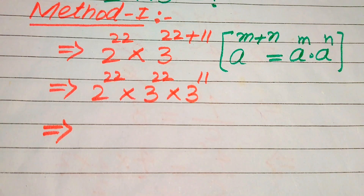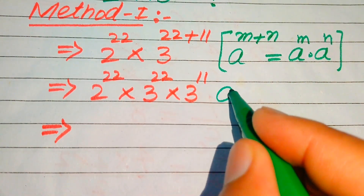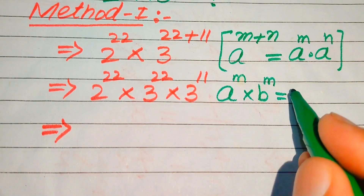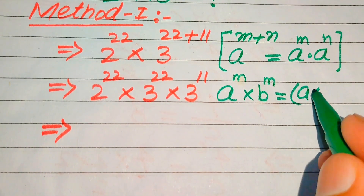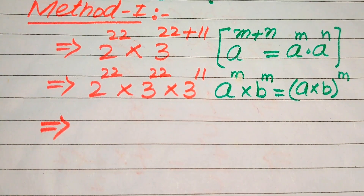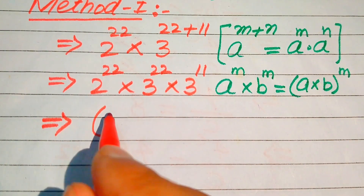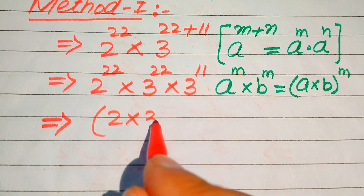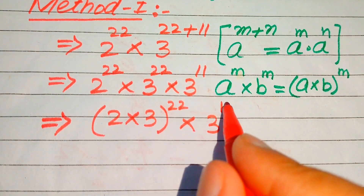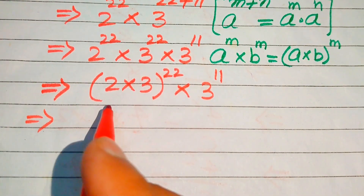Here we use another exponent law and combine these exponents. The law states: a to the power of m multiplied by b to the power of m equals (a multiplied by b) to the power of m. According to this rule we combine the equal exponents, giving us (2 multiplied by 3) to the power of 22, multiplied by 3 to the power of 11.